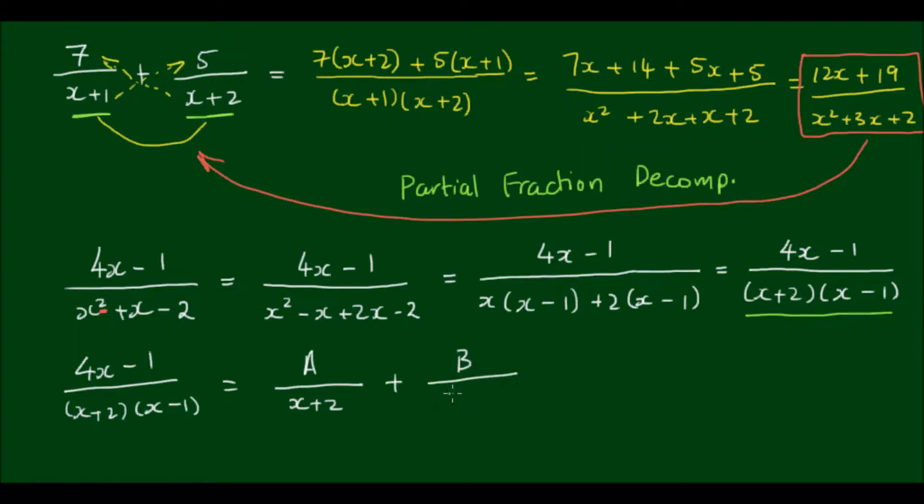And to find these constants A and B, it's actually a matter of doing the very first thing that we did, which is to multiply the two denominators together.